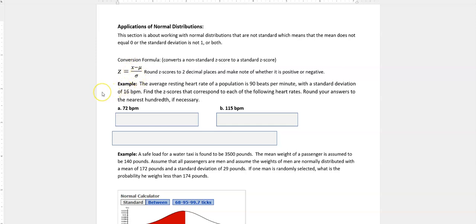This says the average resting heart rate of a population is 90 beats per minute. That's our mu. And with a standard deviation of 16 beats per minute, that's our standard deviation sigma. Find the z-scores that correspond to each of the following heart rates and round your answer to the nearest hundredth if necessary.